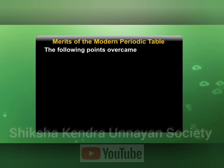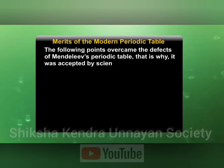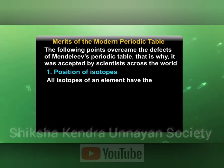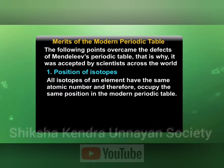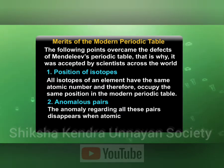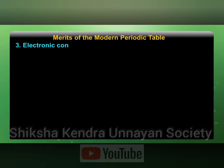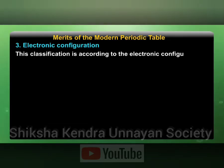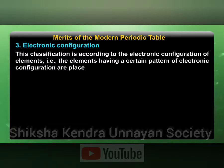The following points show how the modern periodic table overcomes the defects of Mendeleev's periodic table, and that is why it was accepted by scientists across the world. Position of isotopes: all isotopes of an element have the same atomic number and therefore occupy the same position in the modern periodic table. Anomalous pairs: the anomaly regarding these pairs disappears when atomic number is taken as the basis of classification. Electronic configuration: this classification is according to the electronic configuration of elements — elements having a certain pattern of electronic configuration are placed in the same group.